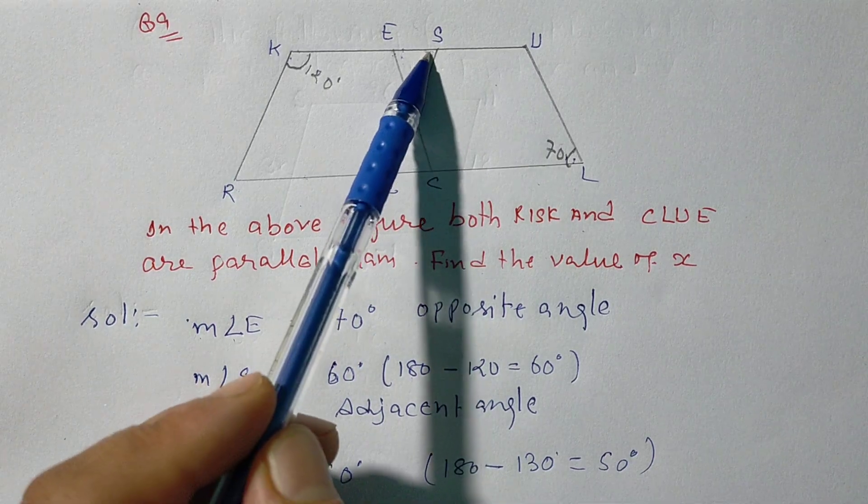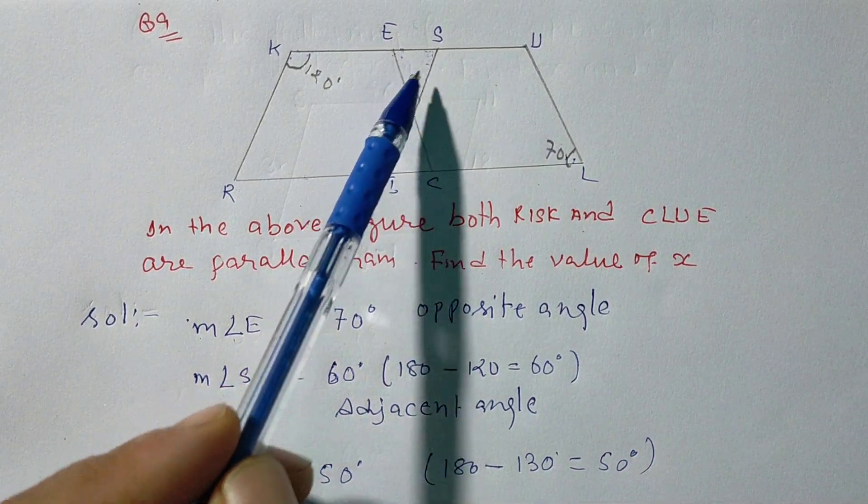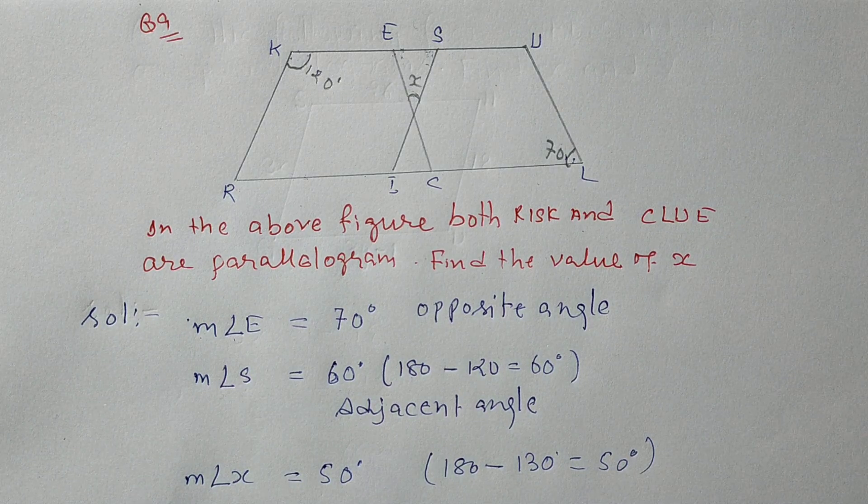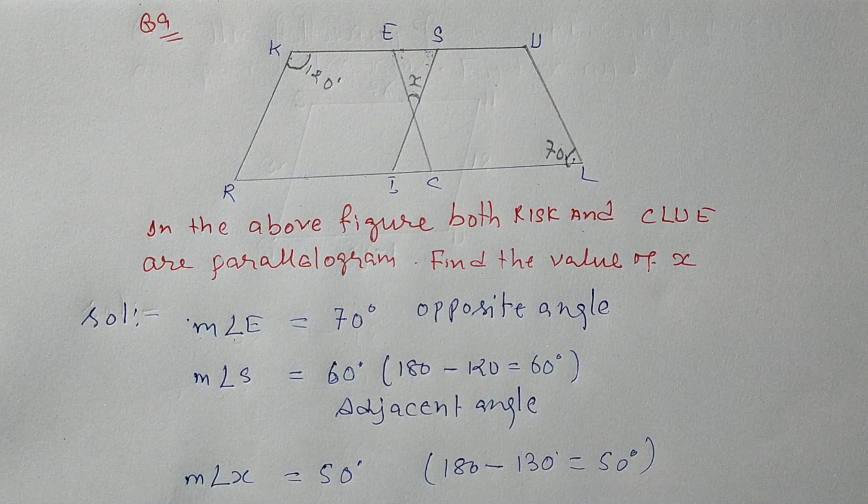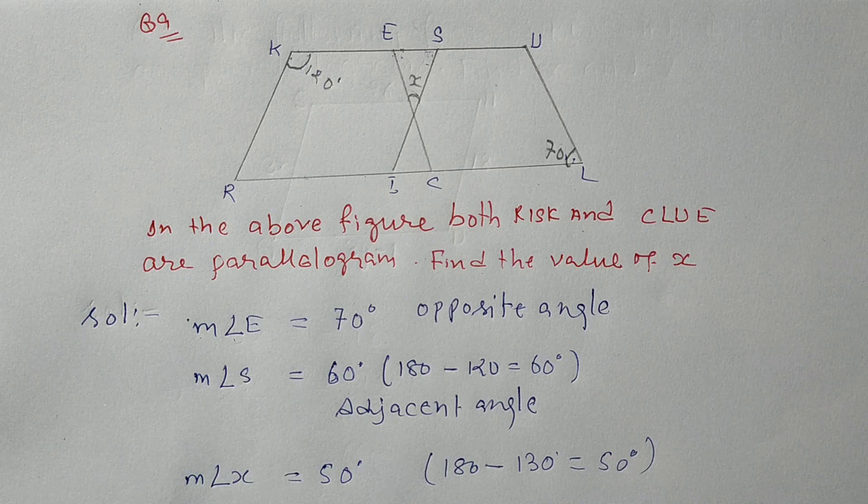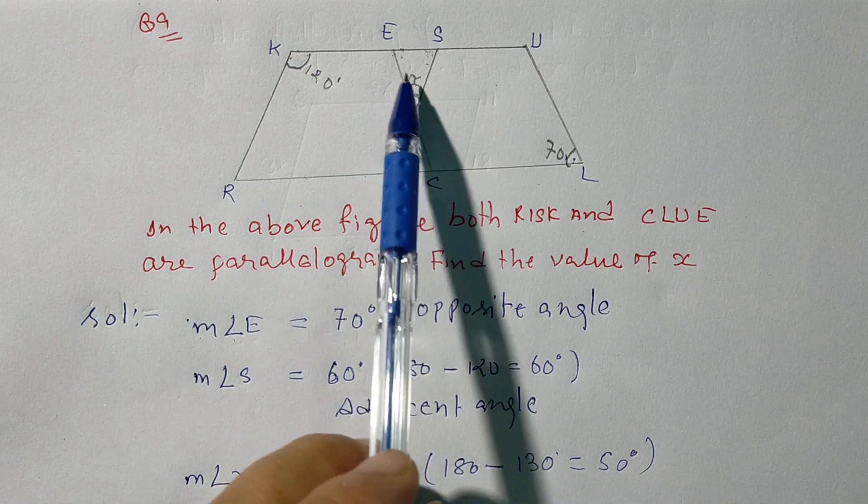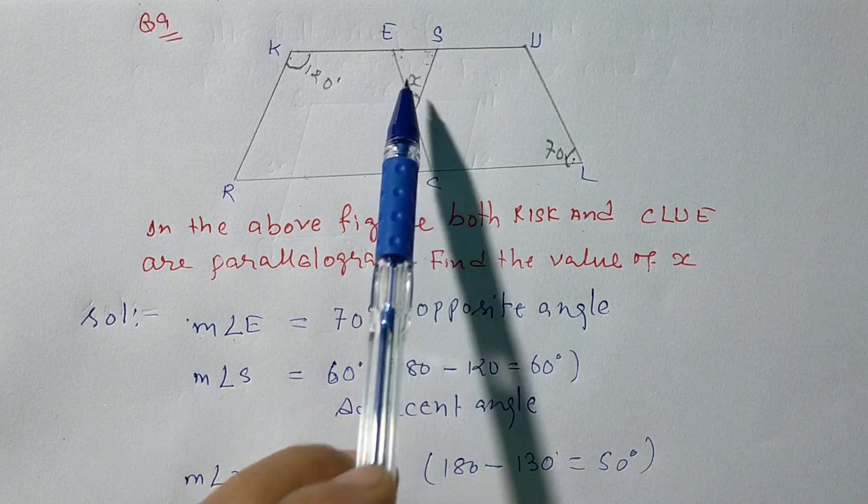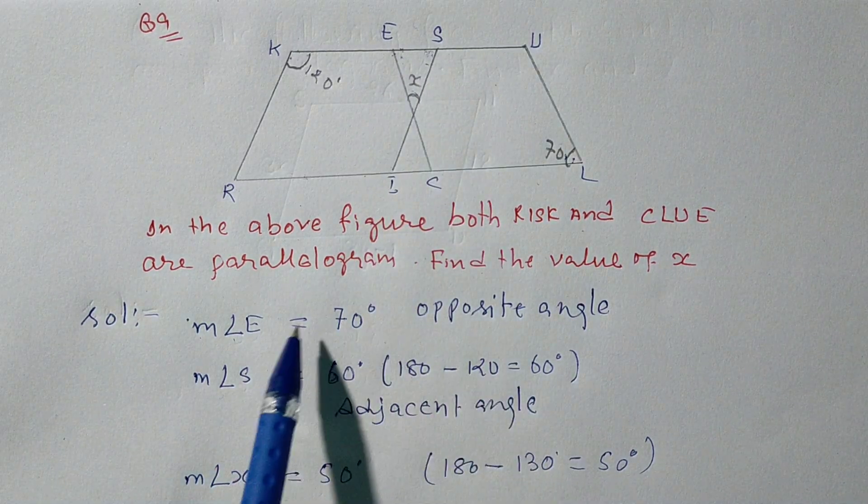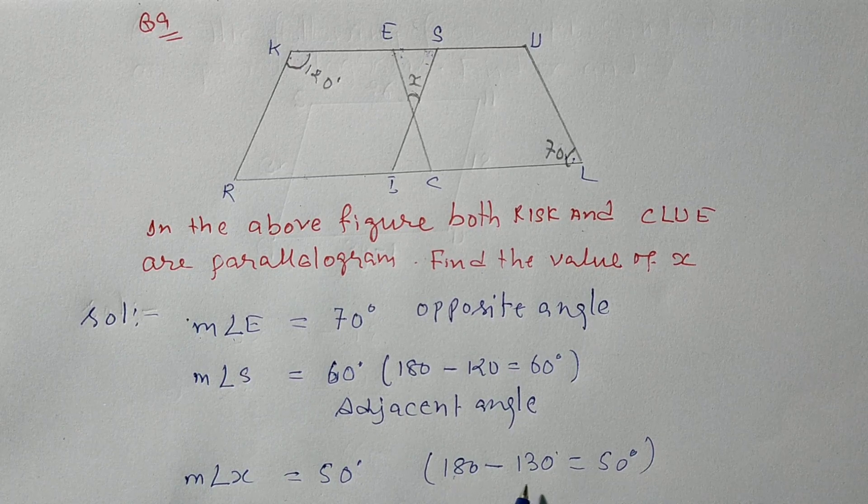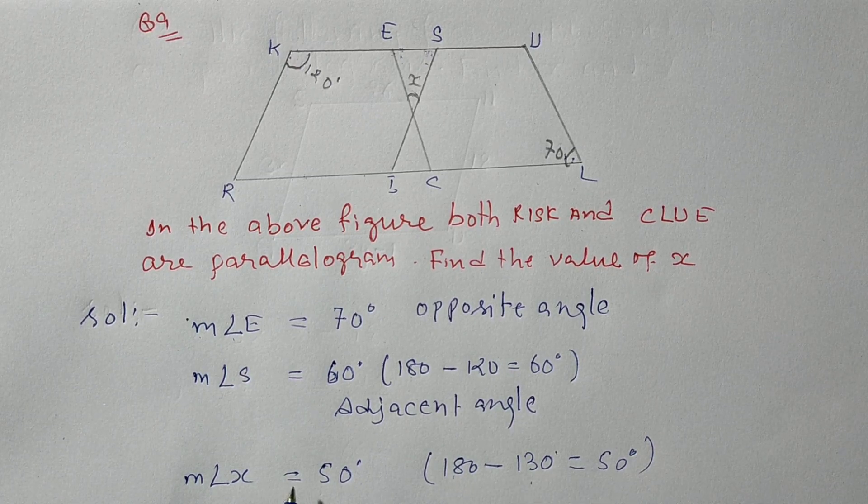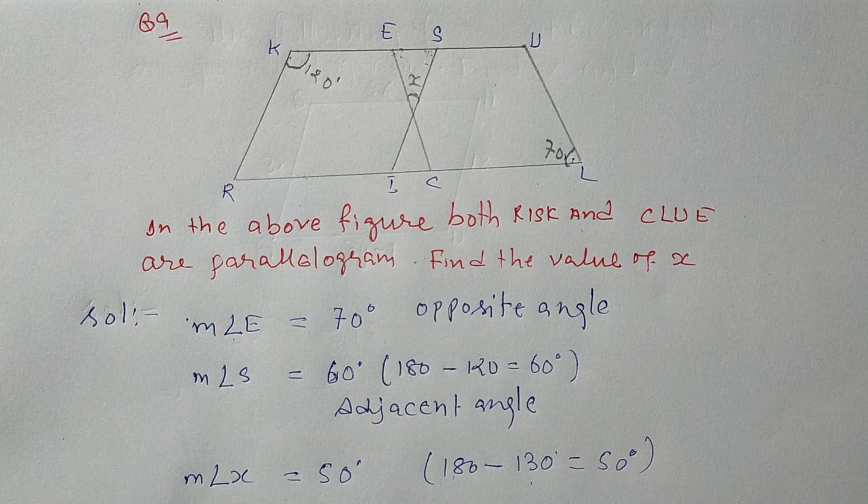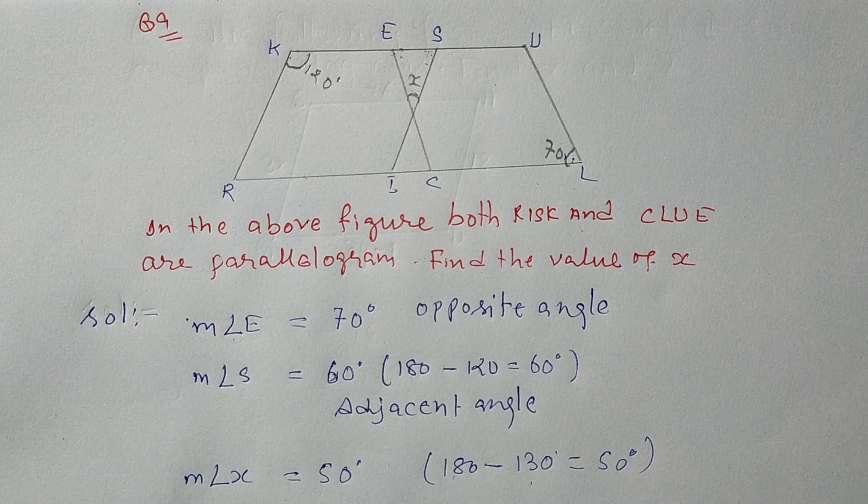Then angle X is equal to 50 degrees. Angle E is 70, angle S is 60. Using the property that sum of three angles of a triangle is 180 degrees, we have 180 minus 130 equals 50. The angle X equals 50. Very easy and very simple.